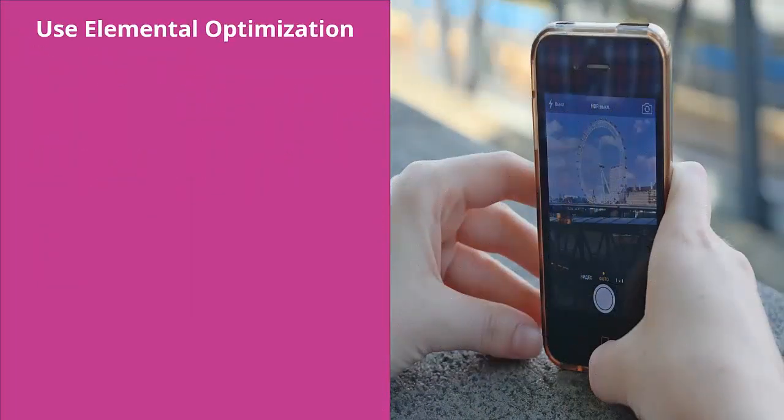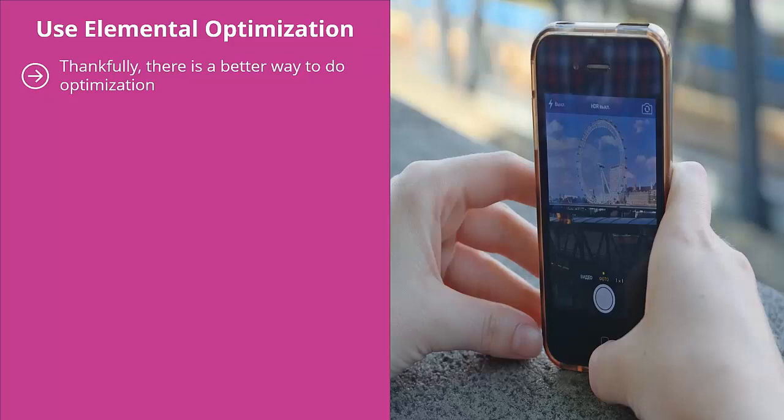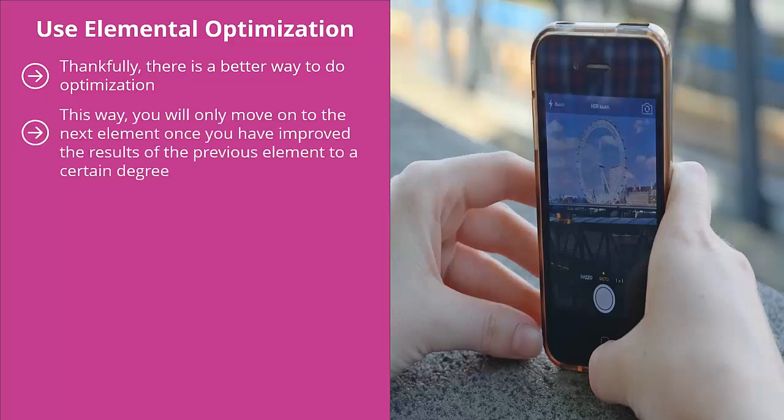Thankfully, there is a better way: elemental optimization. Instead of taking random guesses as to what would turbocharge your sales funnel results, you break up each part of the sales funnel process into elements and make changes on an element-by-element basis. You will only move on to the next element once you have improved the results of the previous element to a certain degree. Once you're happy with those improvements, you move on to the next element, and then the next element after that.